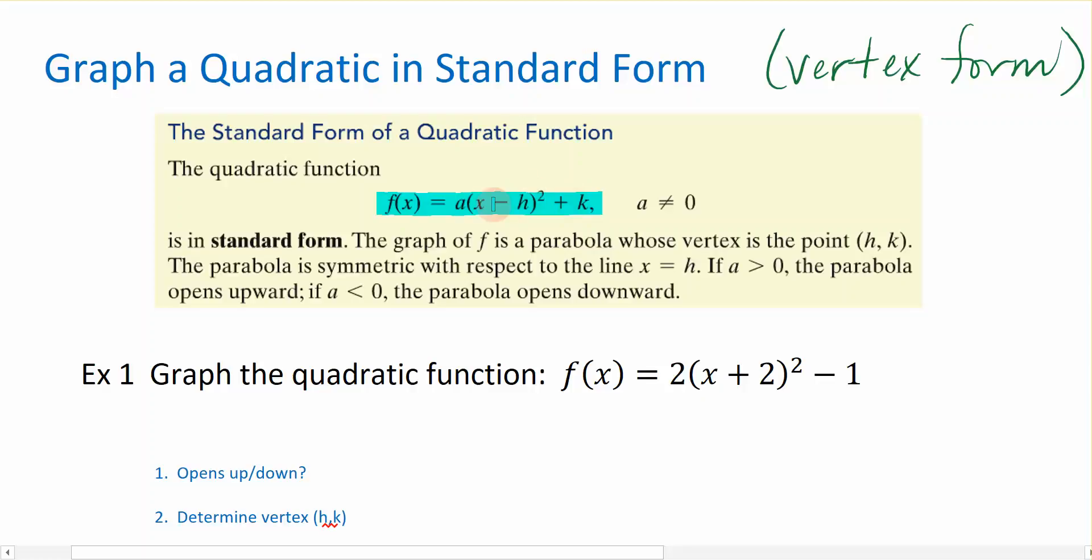This is a quadratic function. Notice that my variable x is raised to the highest power of 2, so that indicates it's quadratic in nature. I still have a leading coefficient a, which is going to help me determine whether or not my function faces up or down. And then the other thing about this formula is this hk. That is the unique part that puts it into this form. And what h and k tell me is the ordered pair for the vertex of the parabola that I'm going to graph.